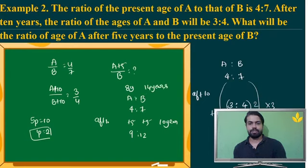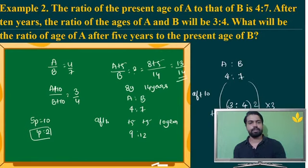The question asks for A's age after 5 years, which is 8 plus 5 equals 13, and B's present age is 14. So the ratio is 13 to 14. Let's go to the next question quickly.